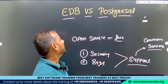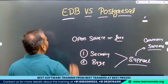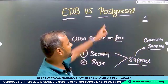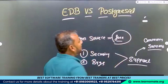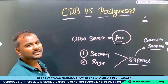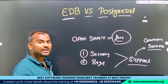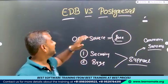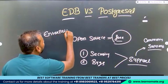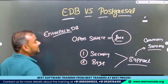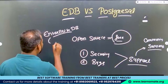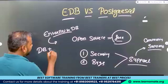This problem was identified by the company called EDB — Enterprise DB. What they did is they took the source code of PostgreSQL, since it is completely free, identified the issues, and added functionalities that were not supported under PostgreSQL. Enterprise DB is still a PostgreSQL database, but with new features and tools.